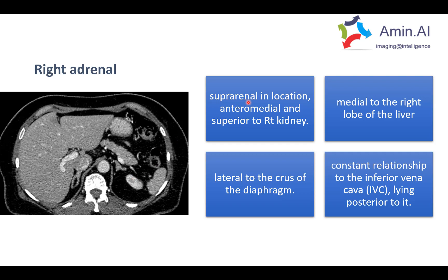For the right adrenal gland, it is suprarenal in location — relatively superior to the right kidney — and medial to the right lobe of the liver. It is lateral to the crus of the diaphragm, and importantly it is always posteriorly located to the IVC, making the IVC a useful landmark. Normally, the thickness of the adrenal limbs is similar to the thickness of the diaphragm crus, so this comparison can be used in daily practice.